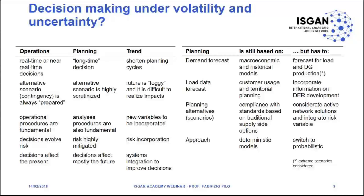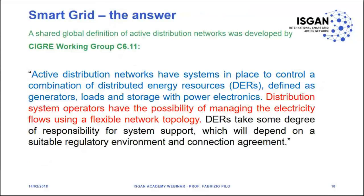Another important point is that we should consider active network solutions, which means we should consider operation also inside planning — this is something new. Another point is about the approach: we were used to being based on deterministic models, but now we believe it is better to switch to probabilistic models, which are the most suited to the new world.